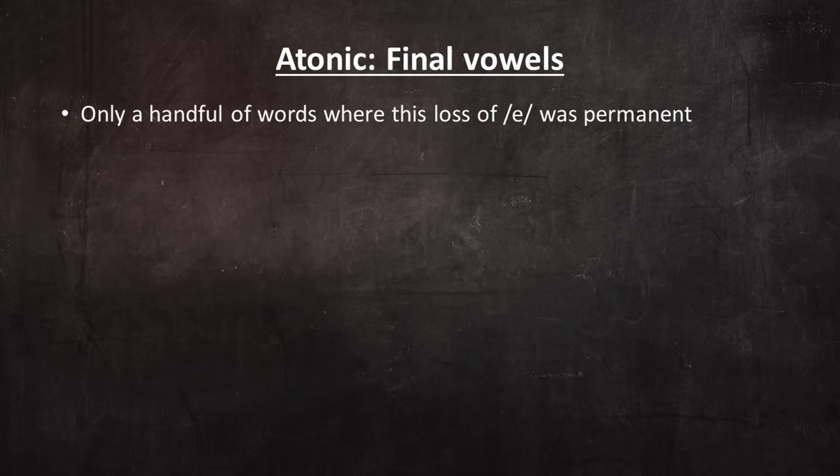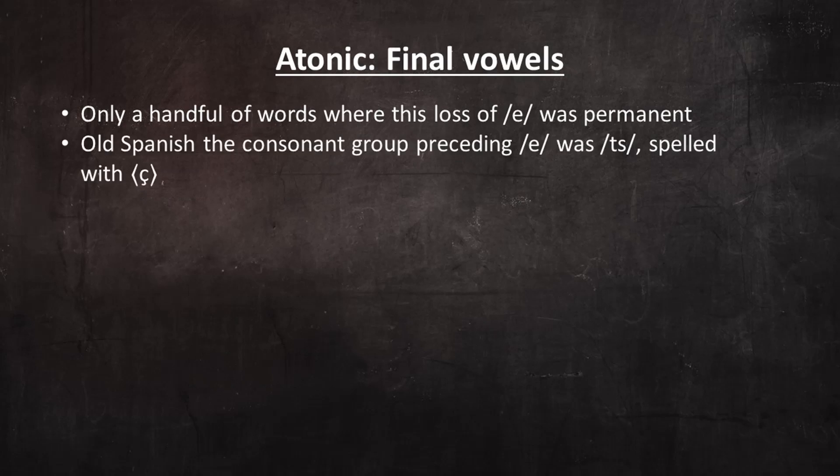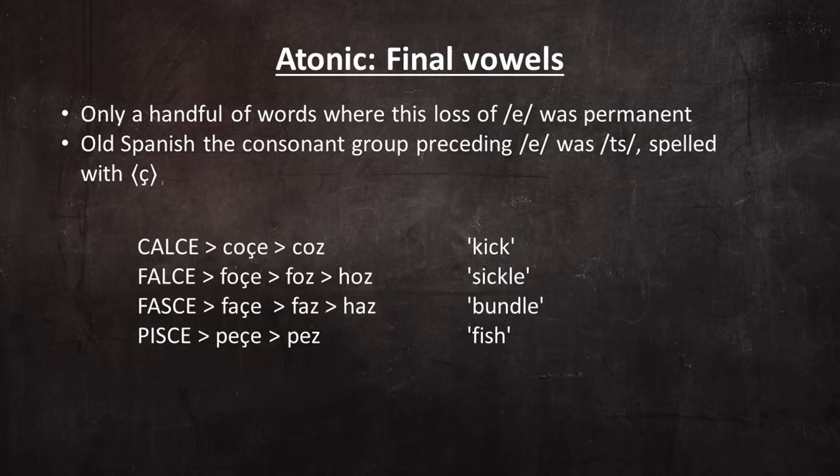There are only a handful of words where the loss of E was permanent, and those are words where in Old Spanish, the consonant group preceding E was TZ, spelled with cedilla. There were centuries of competition between forms with and without E, but eventually the forms without E won out. Here are some examples.